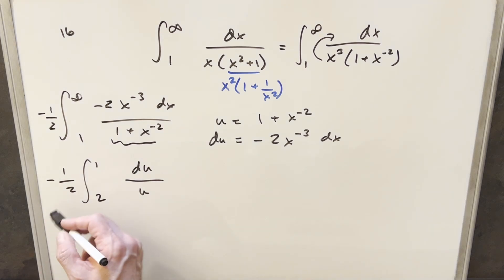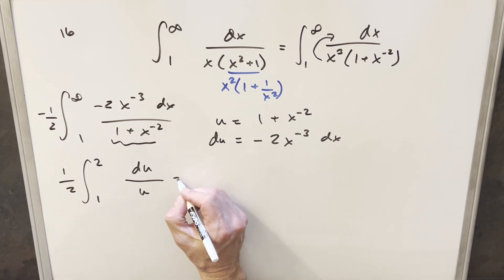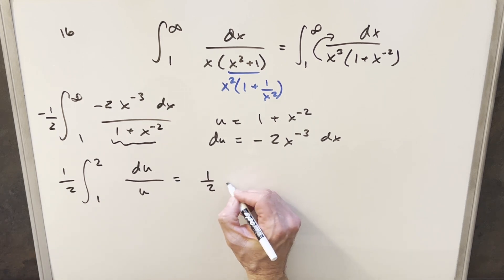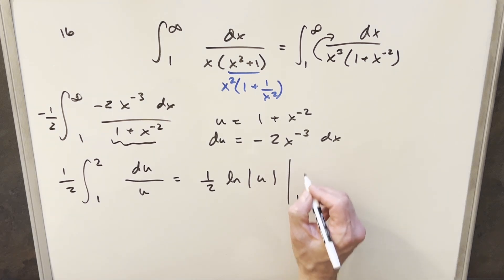Then the numerator becomes du and the denominator becomes just u. Then before I integrate, I'm just going to take this minus sign. I can use it to flip my bound. So we'll just remove this and flip this so we have 2 as the upper bound and 1 as the lower bound. Then we'll just go ahead and integrate. We're going to have 1 half in front. This is going to become natural log absolute value of u. Just need to evaluate it from 1 to 2.